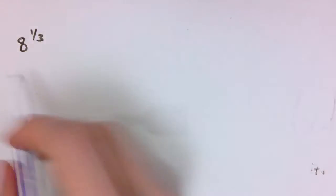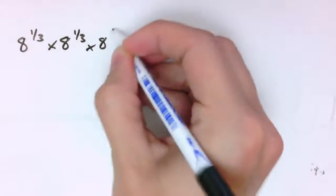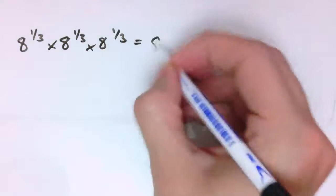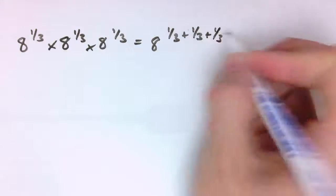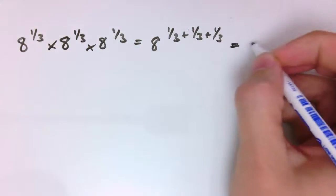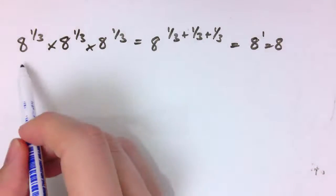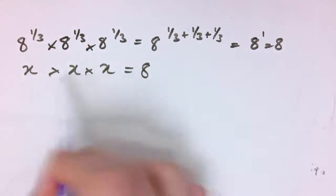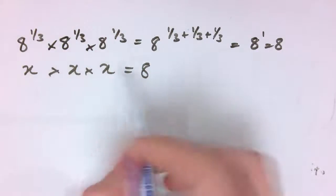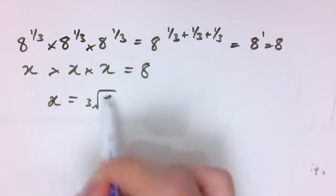What about other fractions other than halves? What about a third? 8 to the 1 third. If I multiplied it by itself 3 times, by the addition rule I should get 8 to the 1 third plus 1 third plus 1 third, so that's 8 to the 1, or just 8. So this is a number x where x times x times x equals 8 — a number that when multiplied by itself 3 times gives 8. So x is the cube root of 8, which in this case would be 2.